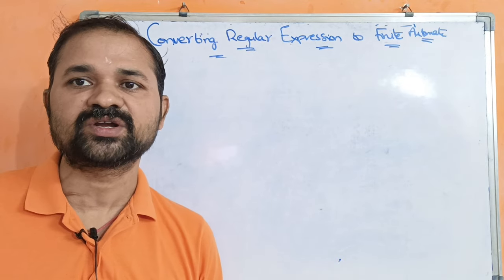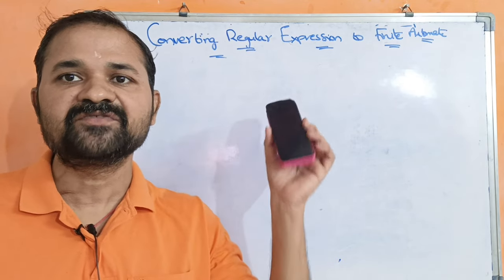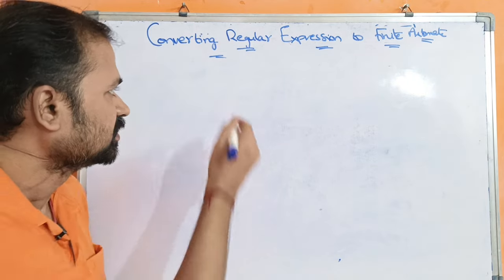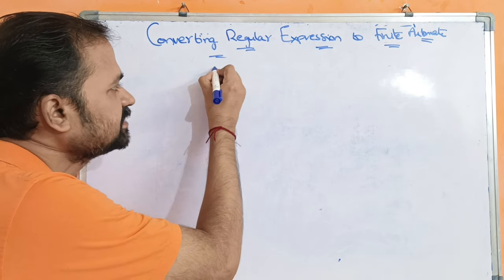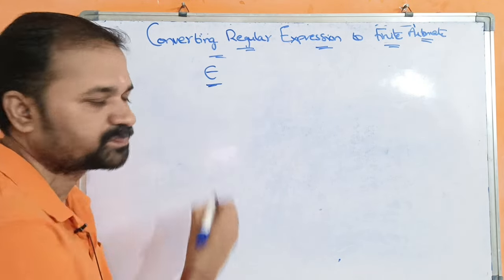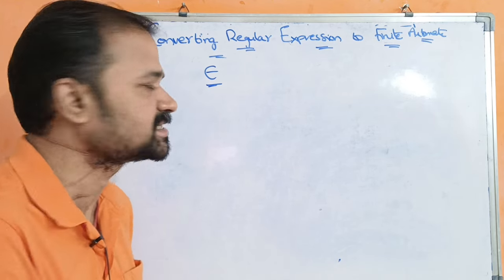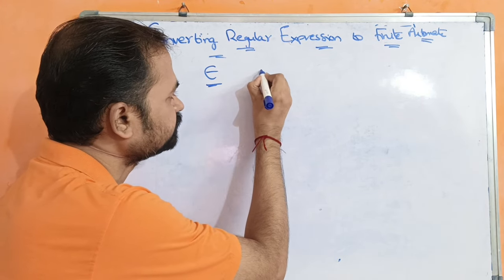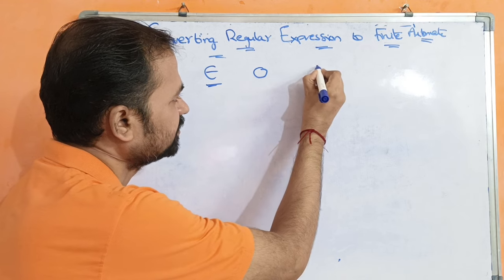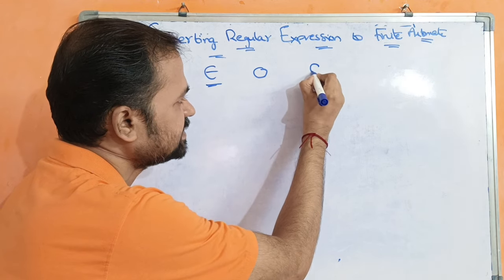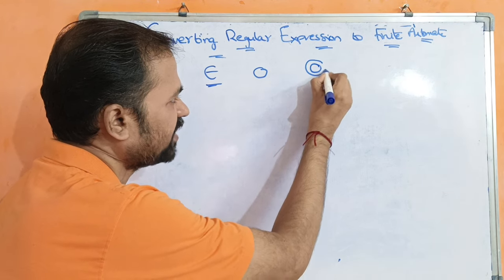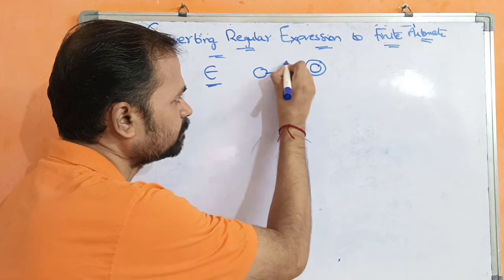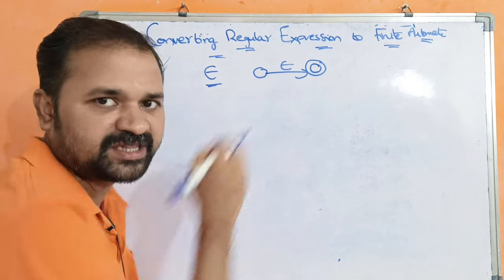Now let us discuss about converting regular expressions into finite automata. If the regular expression is epsilon, then the finite automata requires two states. This is the first state and this is the second state, let it be the final state. So on applying epsilon, we can move from this state to this state.